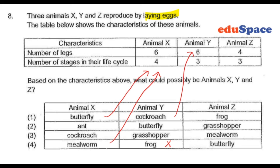And lastly, animal Z has 3 stages in its life cycle and 4 legs. So in this case, a frog is correct. So our answer will be number 1.